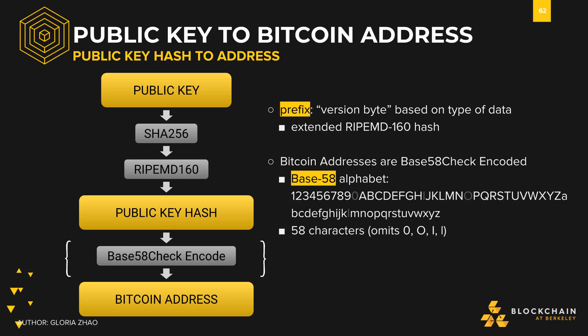After we have our public key hash, we're just a little ways away from arriving at our Bitcoin address. The next step is to make our public key hash a bit more human friendly. First, we add a version byte in front of our previous RipeMD160 hash from the last section. In the version byte, we specify which network we're on — the main Bitcoin network or a smaller test network.